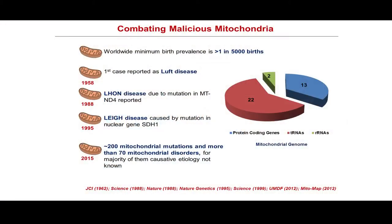The mitochondrial genome comprises only 37 genes and is roughly 16.5 kb in size. Is a genome of 16.5 kb sufficient to be responsible for so many associated disorders? The answer is no. Due to technical advancements in proteomics and sequencing technologies, we have seen a rise in contributing factors responsible for mitochondrial disorders. To date, there are about 200 known mitochondrial mutations and about 70 mitochondrial disorders whose etiology has not yet been fully understood.